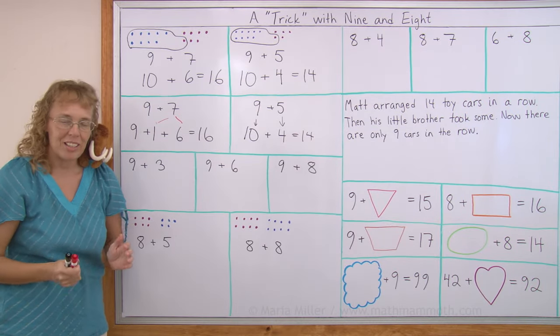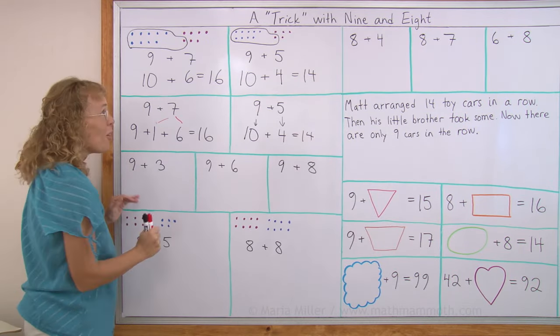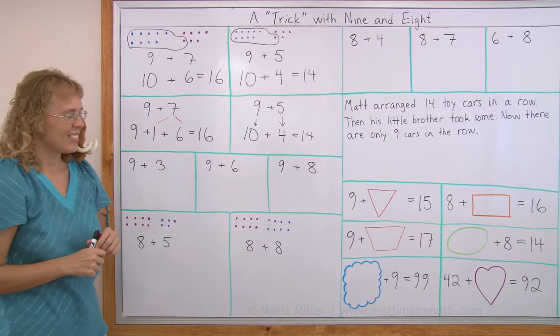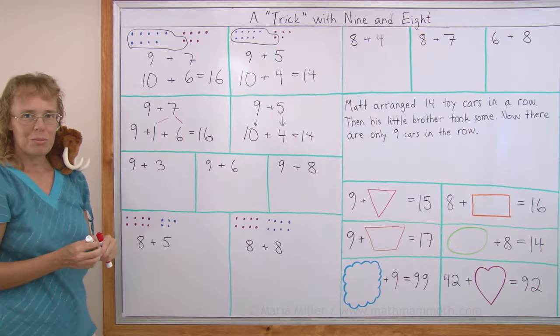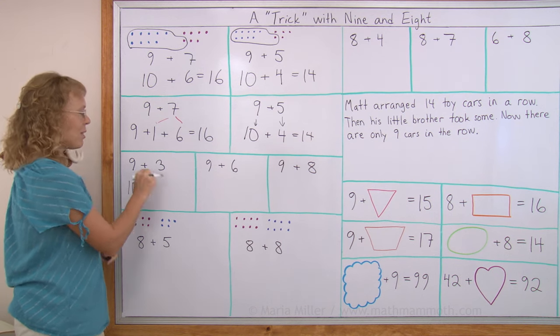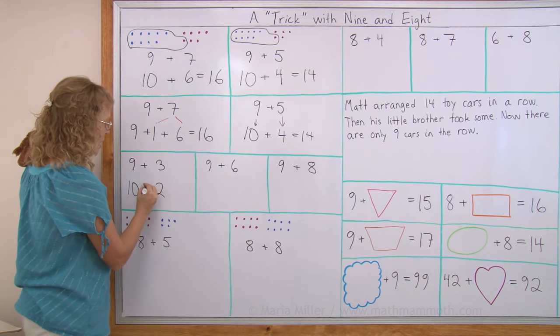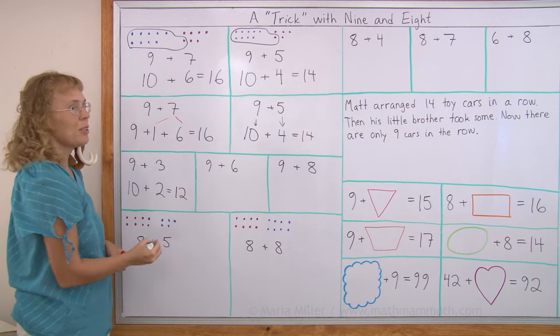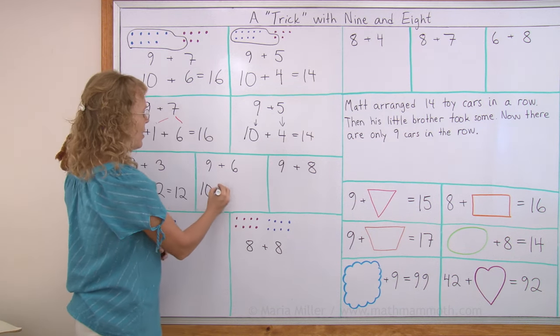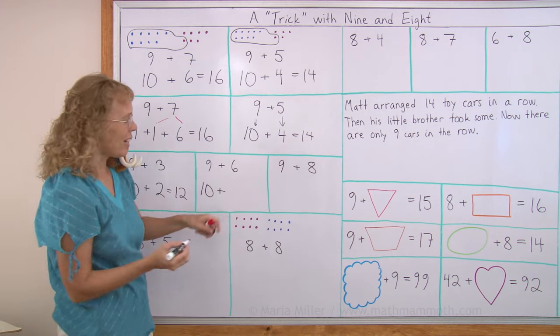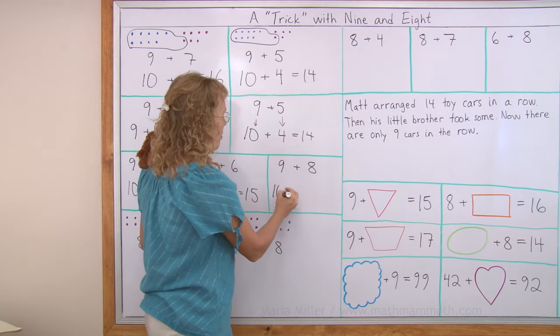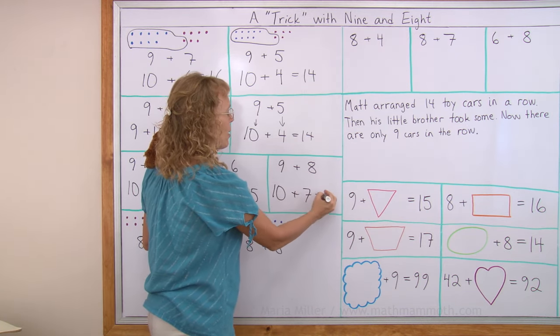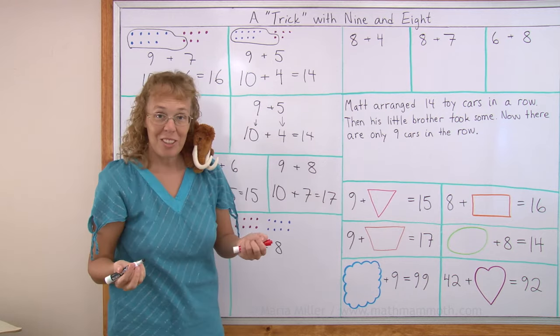Let's practice it a little bit here. Pause the video. Try these 3 problems on your own. Use the trick. 9 wants to be 10. So 9 becomes 10. But 3 becomes 1 less. 10 plus 2. 12. Here, 9 wants to be 10. And so 6 will become 1 less. 10 plus 5. 15. And lastly, 9 becomes 10. And 8 becomes 1 less. So we get 17. Did you get those right? I hope so.